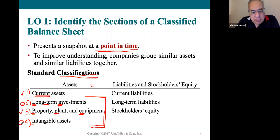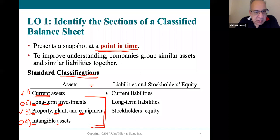Intangible assets are another classification — becoming more important over the years. The word intangible means it's not tangible — it doesn't have a physical quality. Property, plant, and equipment you can feel and touch. Intangible assets are very important things owned by the company, but they don't have a physical quality.